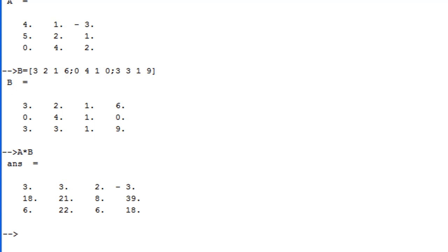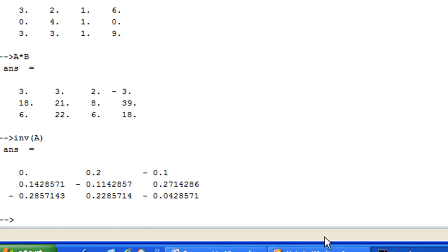And let's say I want to find the inverse of A. A is a 3 by 3 matrix and the inverse of A is quite troublesome to calculate by hand. So the way to find inverse A is to type the command 'inv' — all small letters — which stands for inverse, then open the round bracket, type capital A for matrix A, then close the bracket and press the enter key. Then you get the inverse of A.